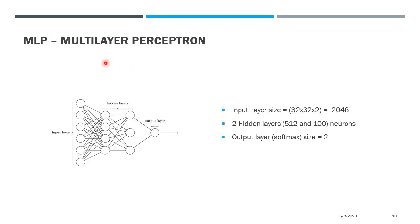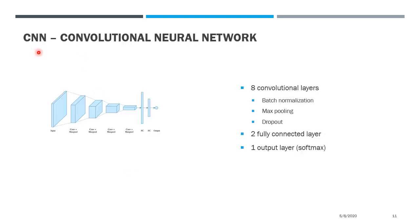Here is a preview of the dataset — these are water areas and these are non-water areas. After obtaining the dataset, we use it to train different neural networks. The first neural network is a multi-layer perceptron with two hidden layers — the first layer has 512 neurons and the second layer has 100 neurons. Another neural network we used is a convolutional neural network; specifically, we trained a CNN with eight convolutional layers and two fully connected layers at the end.